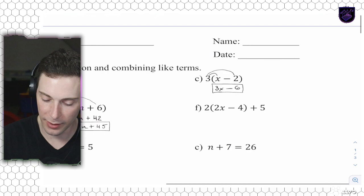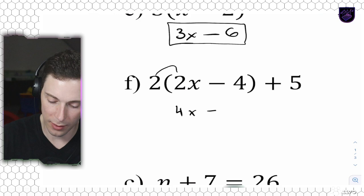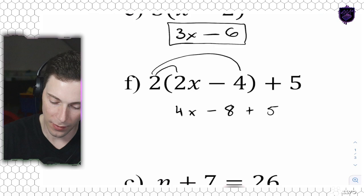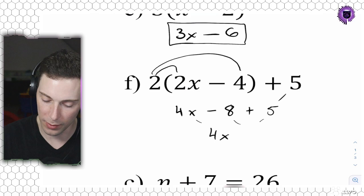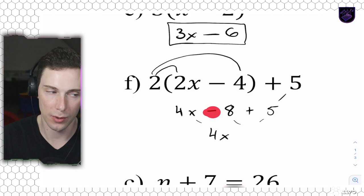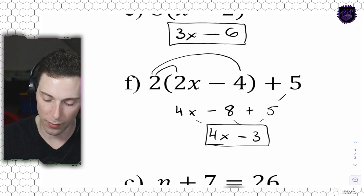And the last one - we're going to go times 2, so it's 4x minus 8, and then we have plus 5 as well, so we drop the 5 down. Now we're going to combine. We still have 4x. And then minus 8 plus 5 - this minus is important. Negative 8 plus 5 is still going to be negative 3. So our answer is going to be 4x minus 3.